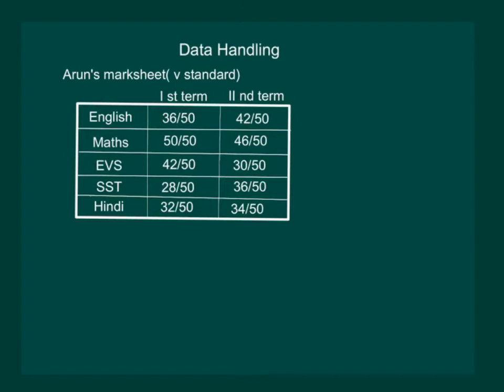Let us take another example and try to study the data. Clearly it is mentioned that it is Arun's marksheet for the fifth standard. We can also see the subjects in the table and that the marks are for the first term and the second term. It is also obvious that all the marks obtained are out of 50.